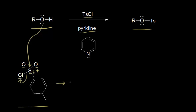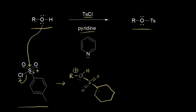Let's go ahead and draw what we would make. We would have an R group, an oxygen, and the oxygen would now be bonded to sulfur. We would also have still a hydrogen attached to that oxygen, and we still have a lone pair of electrons on that oxygen, so the oxygen gets a plus one formal charge. The sulfur is still double bonded to this oxygen and to another oxygen, and then we still have our ring attached to the sulfur, with our pi electrons here.